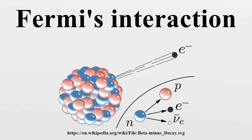In the original theory, Fermi assumed that the form of interaction is a contact coupling of two vector currents. Subsequently, it was pointed out by Li and Yang that nothing prevented the appearance of an axial parity-violating current, and this was confirmed by experiments carried out by Chien-Shiung Wu.